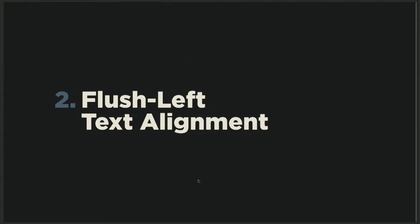Rule number two: use flush left text alignment — or put another way, don't use justified text alignment. Why can't we use justified alignment like in books and magazines? Simply because we don't have the tools for that just yet. Software like InDesign, used for creating printed media, can not only add hyphenation to text but also adjust word and letter spacing to balance the spaces between words when text is justified.